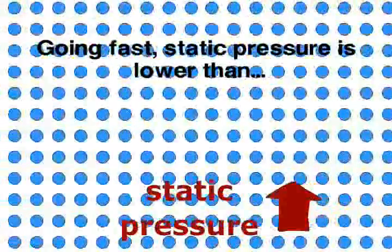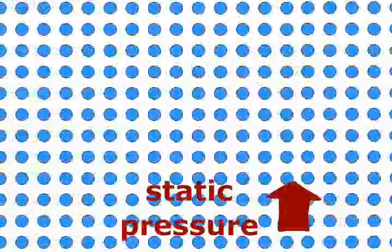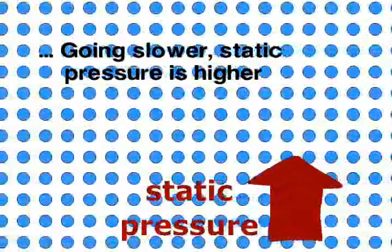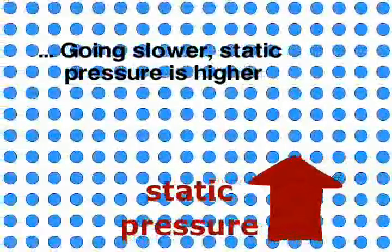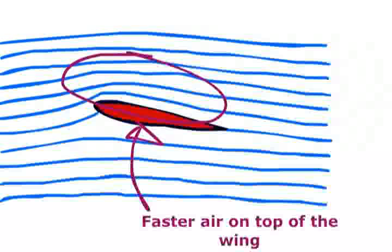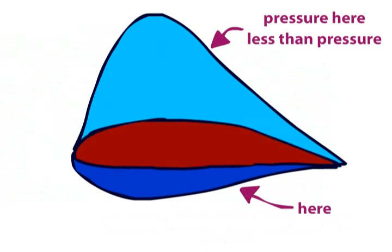He is basically saying that when a fluid is sped up, the static pressure is lower, when compared to a slower moving fluid, when its static pressure will be higher. In this case, the fluid in question is air. Since it is going faster over the top of the wing, a patch of low pressure exists here. Couple this with the higher pressure air under the wing, and you have this situation.